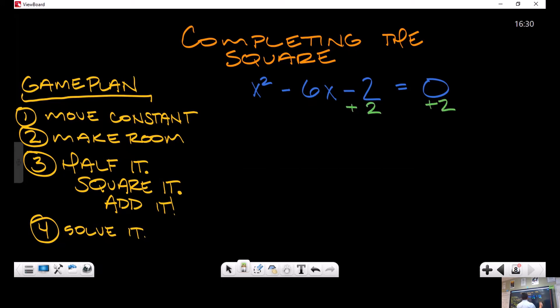First up, I'm going to move my constant - add it to both sides. Then I'm going to make some space. So I've got x² - 6x, here's my space, equals 2 plus... If I made space on one side, I got to do it on the other side. That's just how algebra works - we're going to keep that equation balanced. Next up: half it, square it, add it. Remember, we're talking about b.